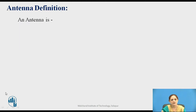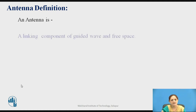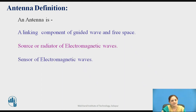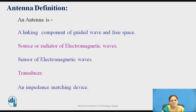Before going to start the parameters of an antenna, let us recall what is an antenna. Antenna is a linking component of guided wave and free space. It is a source and radiator of electromagnetic waves, a sensor of electromagnetic waves, a transducer because it converts one type of energy into another form, and it is an impedance matching device.